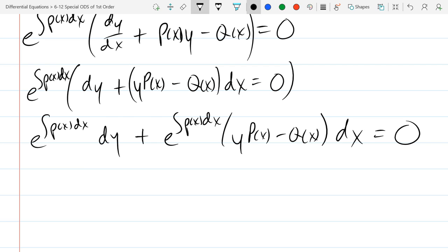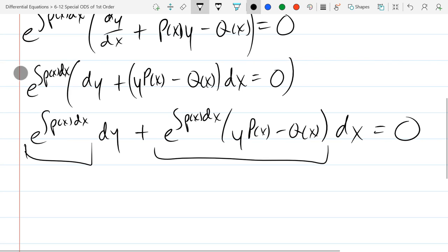So how do we show this is exact? We got our two coefficient functions right here. Let's rename them. I don't really want to use p and q, so let's go with capital A, capital B. So A is going to be e to the integral px dx.